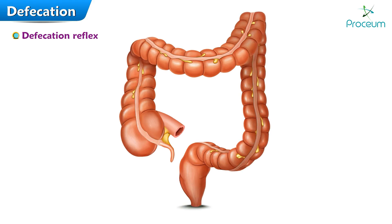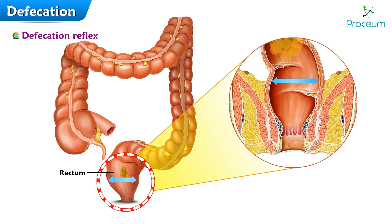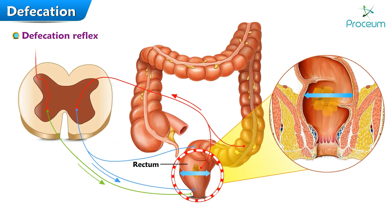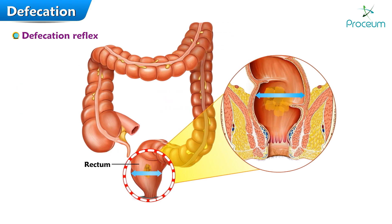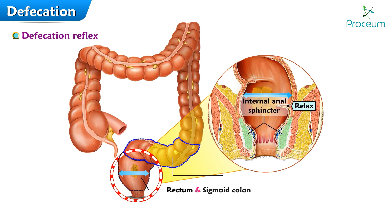Feces are eliminated by the defecation reflex when mass movements of the colon move feces into the rectum. The resultant distension of the rectum stimulates stretch receptors in the rectal wall, initiating the defecation reflex. This reflex causes the internal anal sphincter, which is smooth muscle, to relax and the rectum and sigmoid colon to contract more vigorously.